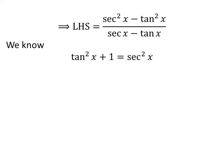We know the famous trigonometry identity: square of tangent of x plus 1 is equal to square of secant of x. Hence, square of secant of x minus square of tangent of x is equal to 1.